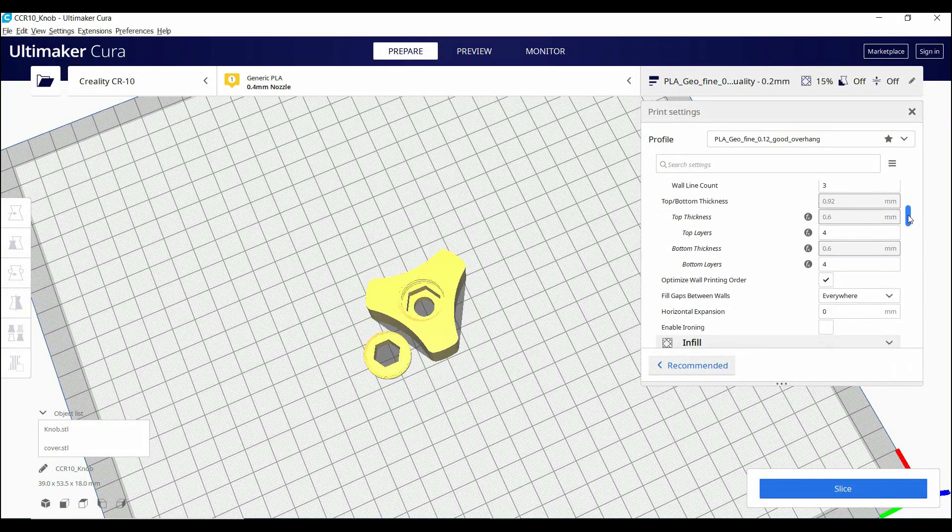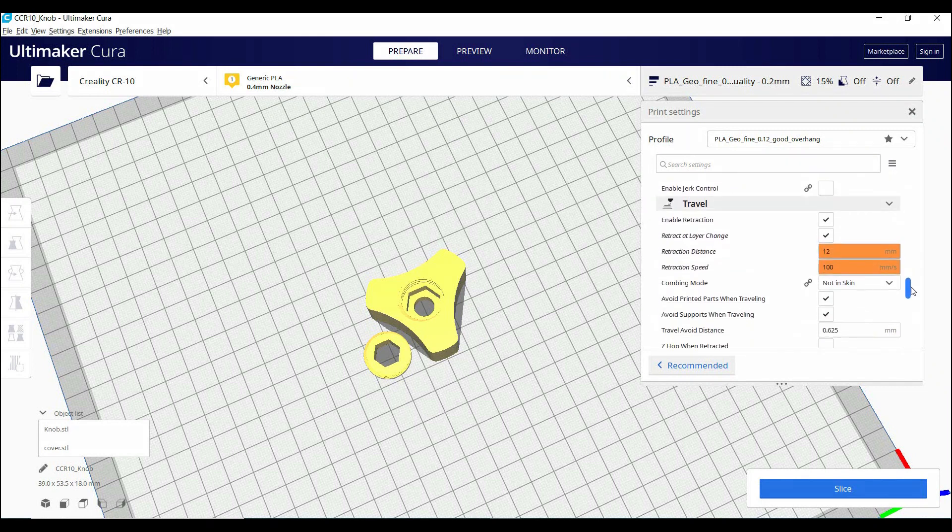Here you can see the slicer settings that I use for the print. I let you pause the video if you need to check it in details.